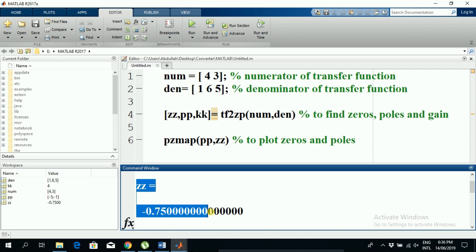We have a zero at minus 0.75. We have two poles, one at minus one and the other at minus five. The gain is four.